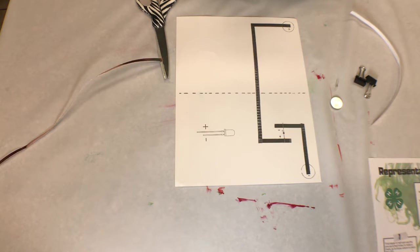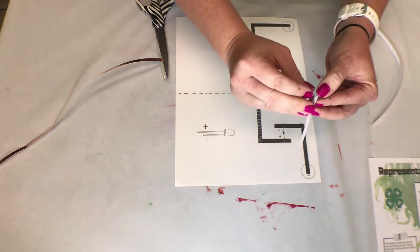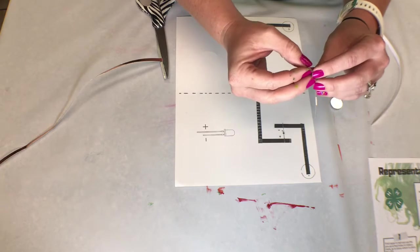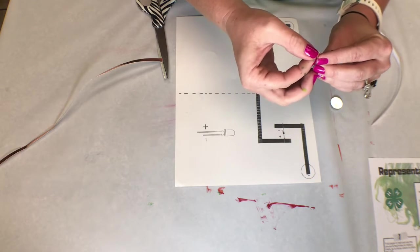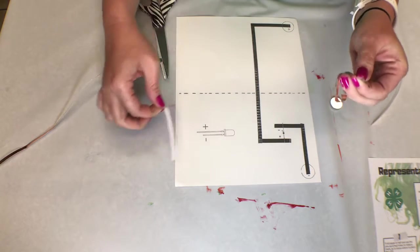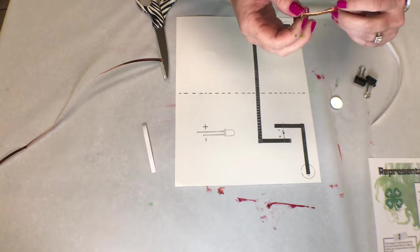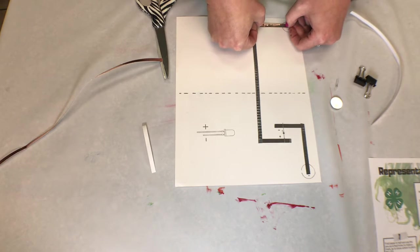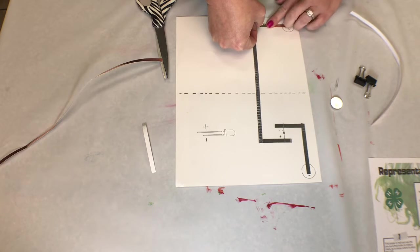So you're going to do just a little bit at a time, and if you peel it apart, you can stick it on the black line.